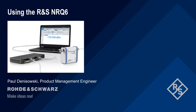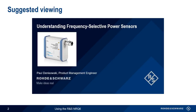Hello, and welcome to this presentation using the Rohde & Schwarz NRQ-6. This presentation will show you how to configure the NRQ-6 for making different types of RF power measurements. The NRQ-6 is a frequency-selective or receiver-based power sensor. If you're unfamiliar with the difference between traditional and receiver-based power sensors, it might be a good idea to watch the video 'Understanding Frequency Selective Power Sensors' before beginning this presentation.